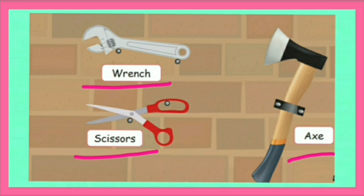Axe. A-X-E. Kodari. Axe is a tool with a wooden handle and a heavy metal head with a sharp edge used for cutting wood.